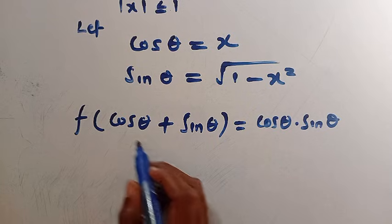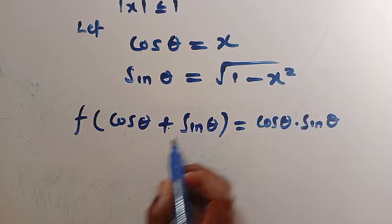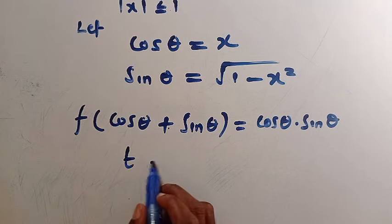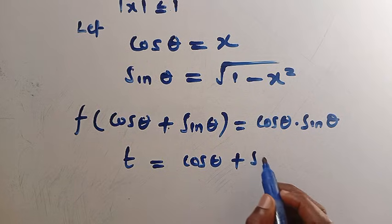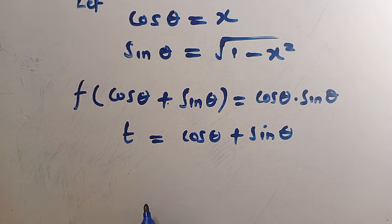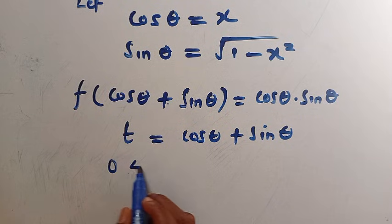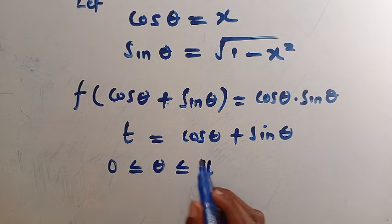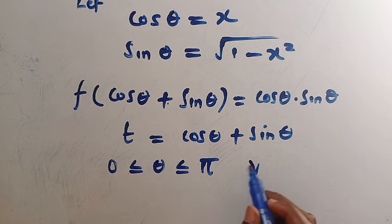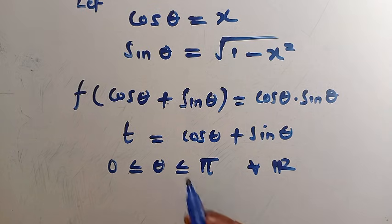Now we apply another substitution. We have cos θ + sin θ, and we let t = cos θ + sin θ. At this stage, we understand that for every θ in [0, π], we need the square root of 1−x² to be real, which means √(1−x²) equals the absolute value of sin θ.